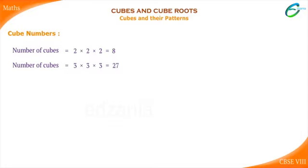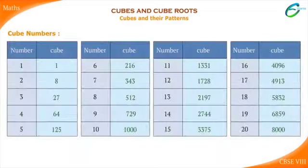We can write 8 as 2 cube, and 27 can be written as 3 cube. Here we have a list of the first 20 natural numbers and their cubes.